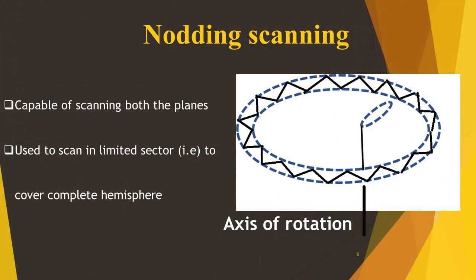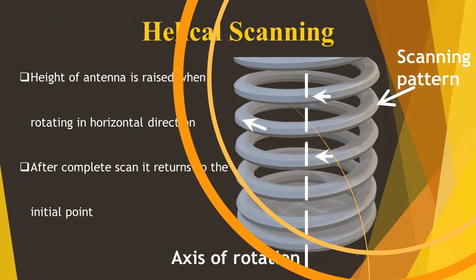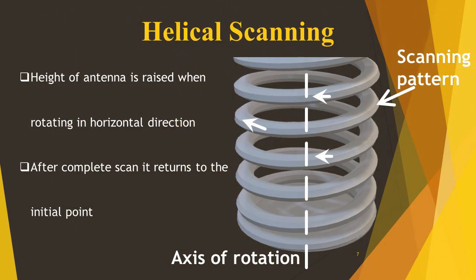Nodding scanning is capable of scanning in a zigzag position and it can scan both planes. It can be used to scan in a limited sector, which means it can cover a complete hemisphere.